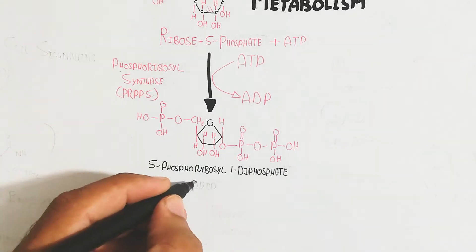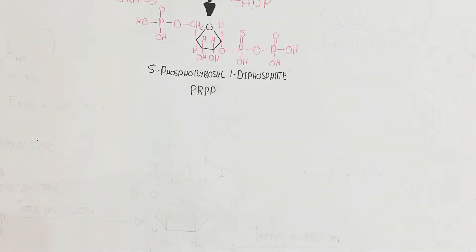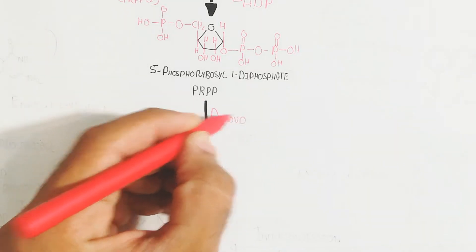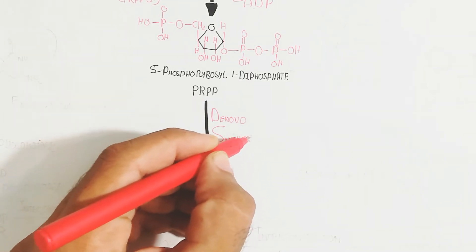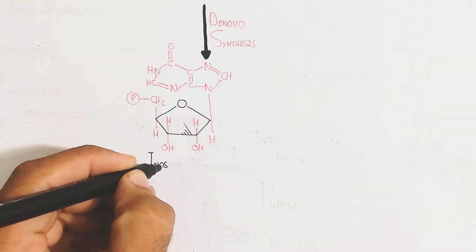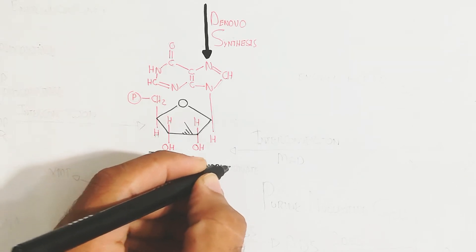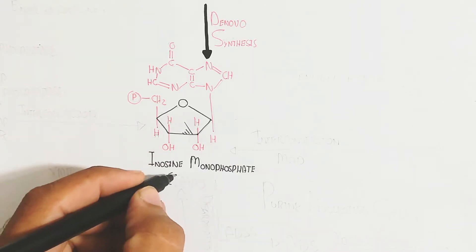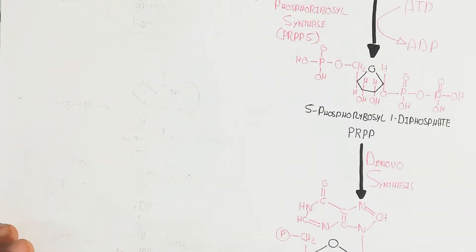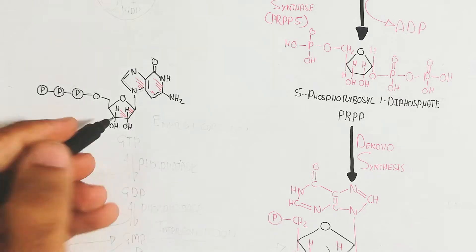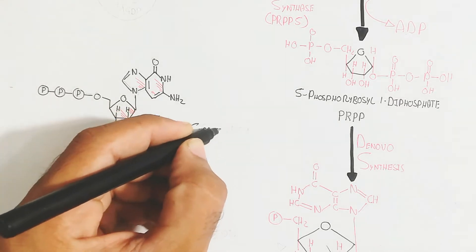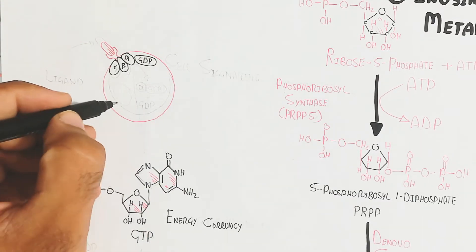This 5-phosphoribosyl-1-pyrophosphate (PRPP) is converted through de novo synthesis into inosine monophosphate (IMP). IMP is the central metabolic intermediate used for the synthesis of several nucleotides. It is synthesized with the involvement of GTP, which is an energy currency.